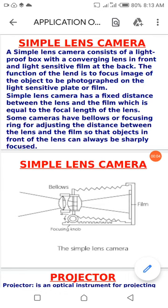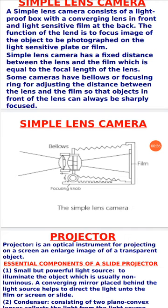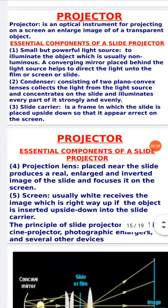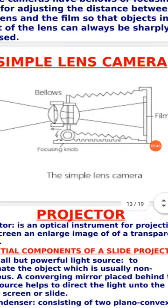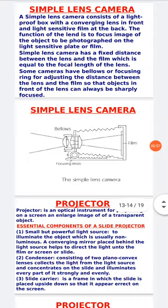A simple lens camera has a fixed distance between the lens and the film which is equal to the focal length of the lens — the distance between the film and the converging lens must equal the focal length. Some cameras have bellows or focusing rings for adjusting the distance between the lens and the film so that objects in front of the lens can always be sharp and focused.